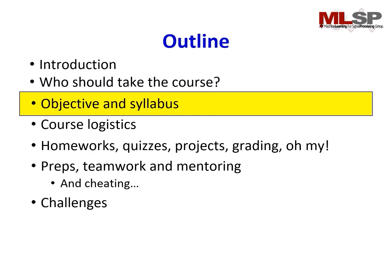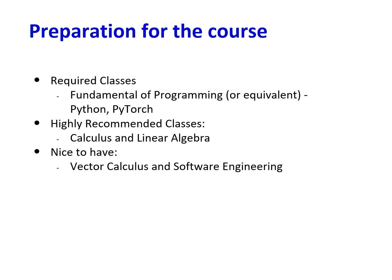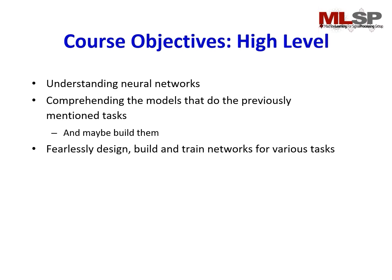Let's talk about the objectives and the syllabus. As preparation for this course, we require you to have a fundamental understanding of Python and PyTorch, and we highly recommend you to take classes such as calculus and linear algebra. Vector calculus and software engineering are also nice to have. The course objective at a high level is for you to understand neural networks, comprehend the models that perform the previously mentioned tasks, and maybe build them — and fearlessly design, build, and train networks for various tasks.